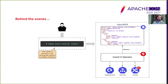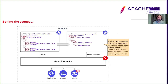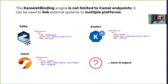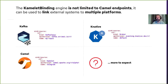The Kamelet binding is not limited to Camel endpoints. It can be used, for example, to link to a Strimzi system or multiple platforms — you may point to a Strimzi Kafka cluster using different CRDs like KafkaTopic, but also Knative Broker, and obviously different Kamelets. So in the future there will probably be more external systems to point to — this is another interesting extension point for the Kamelets technology.